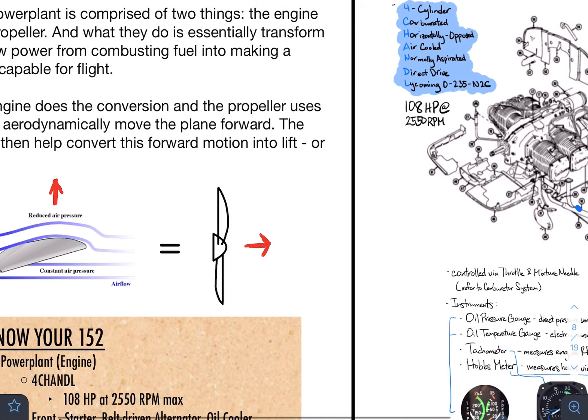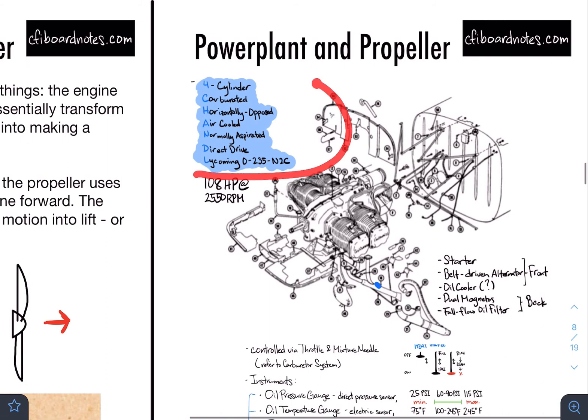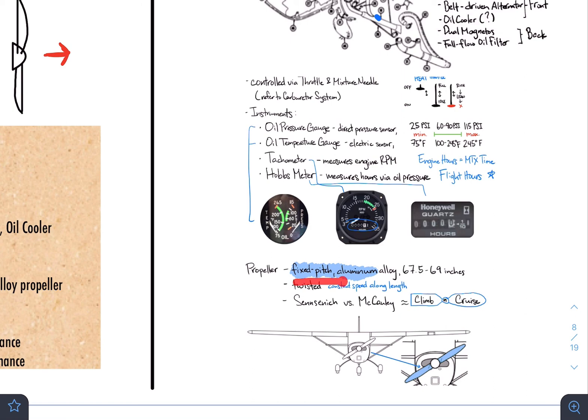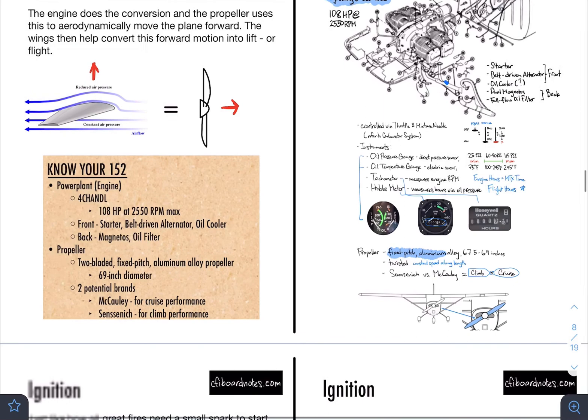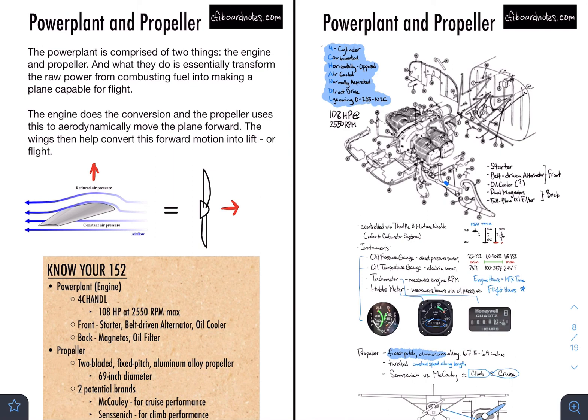As a quick run-through: when your DPE asks about the engine, they really only want to know CHANDLE and for you to explain all of it. For the propeller, fixed-pitch aluminum alloy is mostly what they'll ask for — that is what was asked during my checkride. It is up to you whether to over-explain, though I would suggest against it. That is the power plant and propeller section; leave comments below or shoot us an email. Thanks for sticking with us.